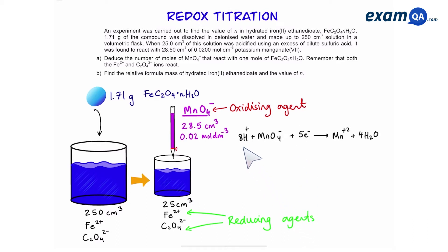This is the half equation for the oxidizing agent manganate. This is for one of the reducing agents iron and this is for the other one. Since iron and ethane di-O8 are both reducing agents what we can do is combine them into one equation.